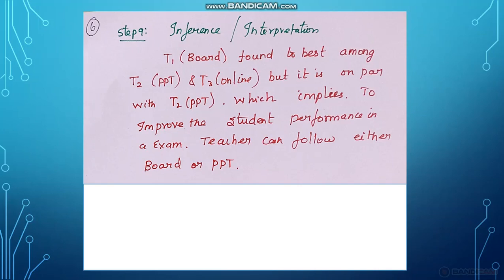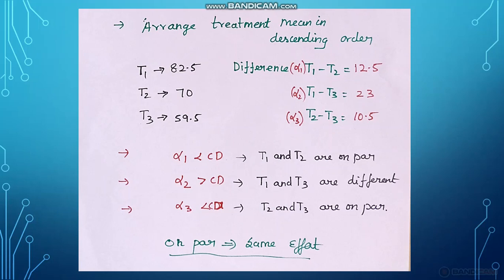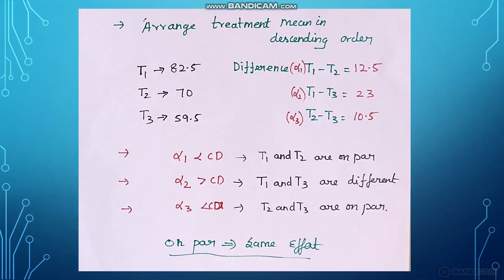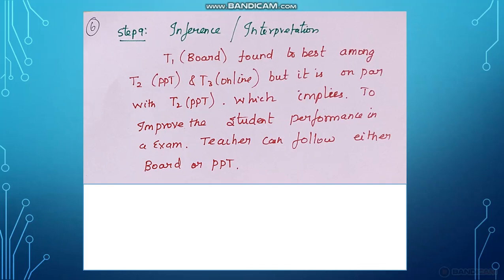Now the statement or interpretation: T1 (board teaching) is found to be best among T2 and T3 — that is, board teaching is best among PPT and online teaching. But T1 is on par with T2, meaning T1 and T2 have the same effect. Though T1 is best because its mean value is higher, in the CD test T1 and T2 are on par, so board teaching is on par with PPT teaching.